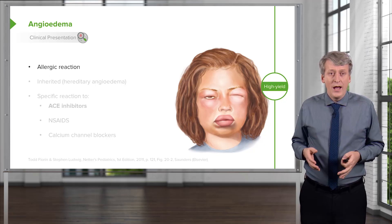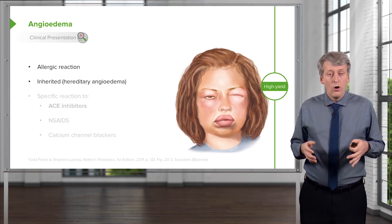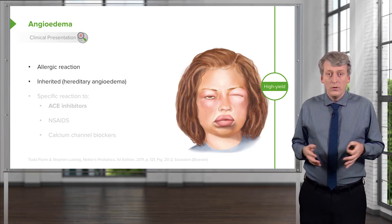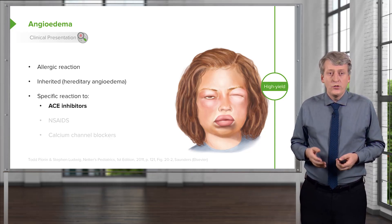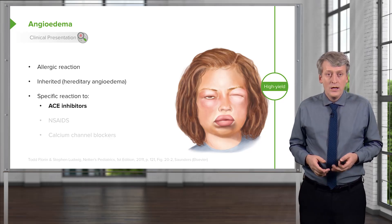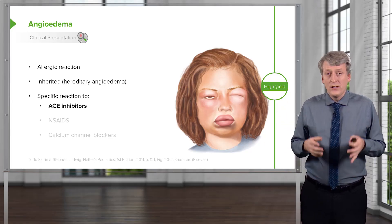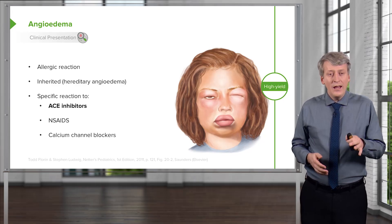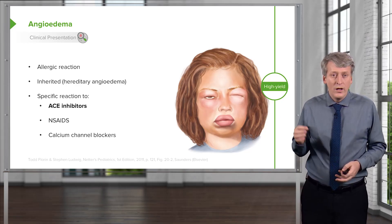Angioedema can be allergic, or it can be inherited — there are rare diseases such as hereditary angioedema where patients can get this randomly throughout their lives. We sometimes see this with certain medications, and the classic one is the ACE inhibitor. Any patient on an ACE inhibitor who gets this reaction, it's an emergency because we may lose that airway. Additionally, NSAIDs can do this, and calcium channel blockers can rarely do this — but the classic one is ACE inhibitors.